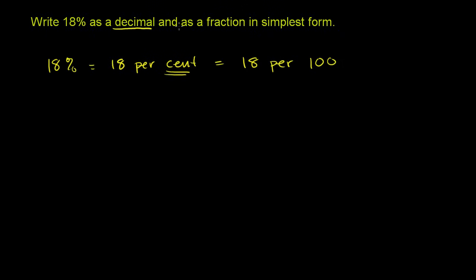Actually, I said I would do the decimal first, but we can start putting it into a fraction first. 18 per 100 as a fraction literally means 18 per 100. We're literally doing the fraction first. This literally means 18 per 100, or 18 hundredths.